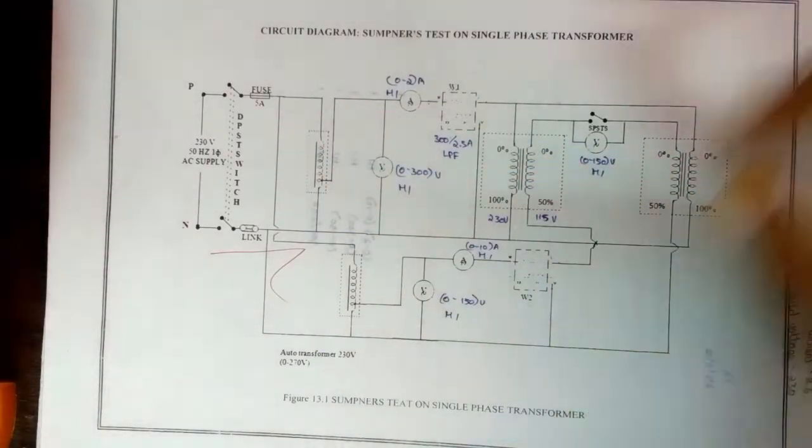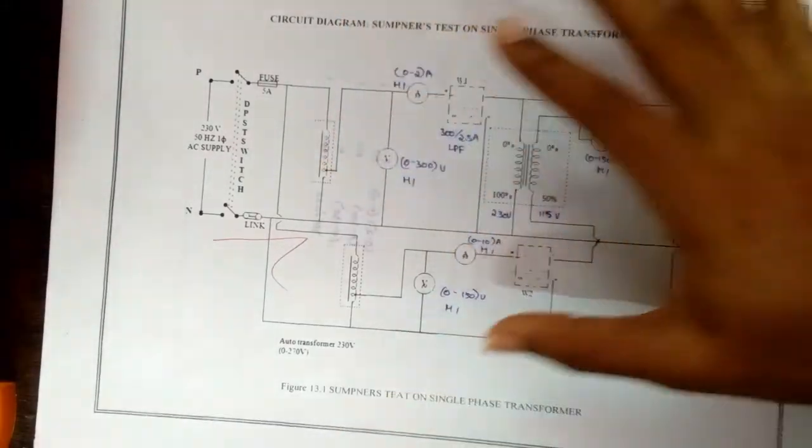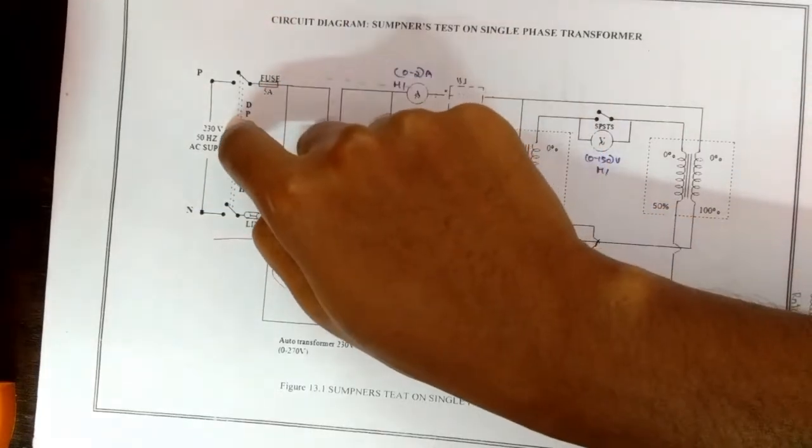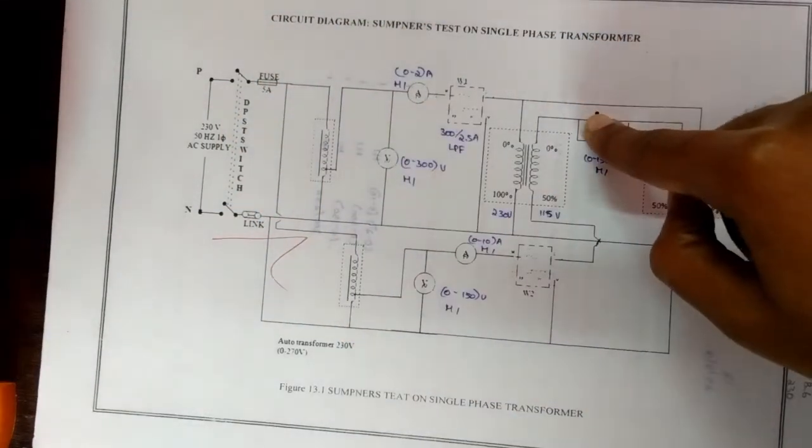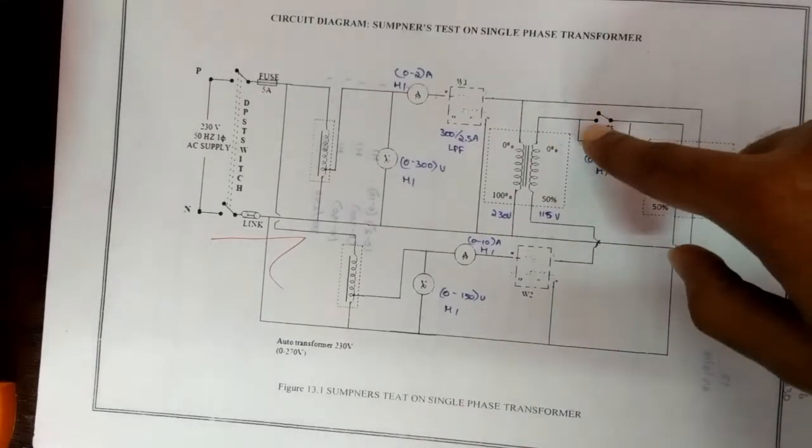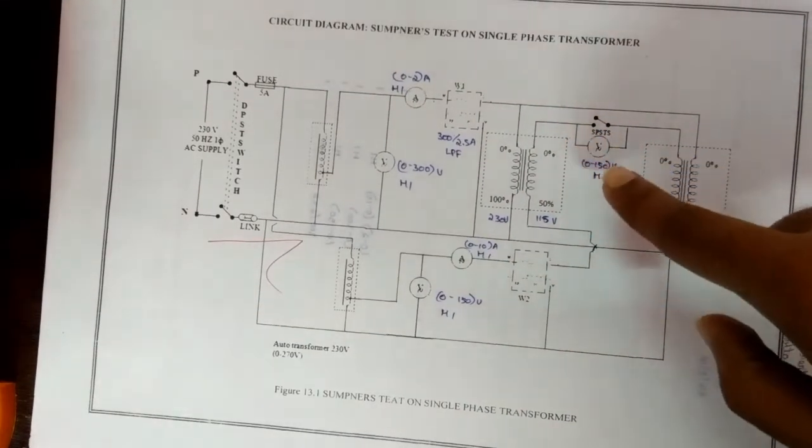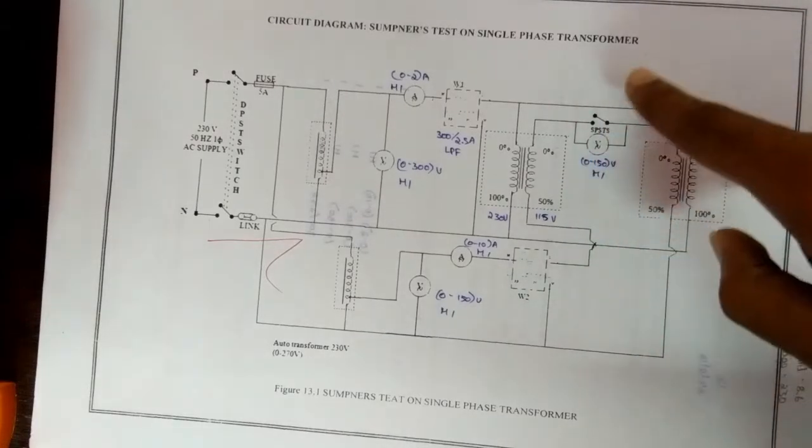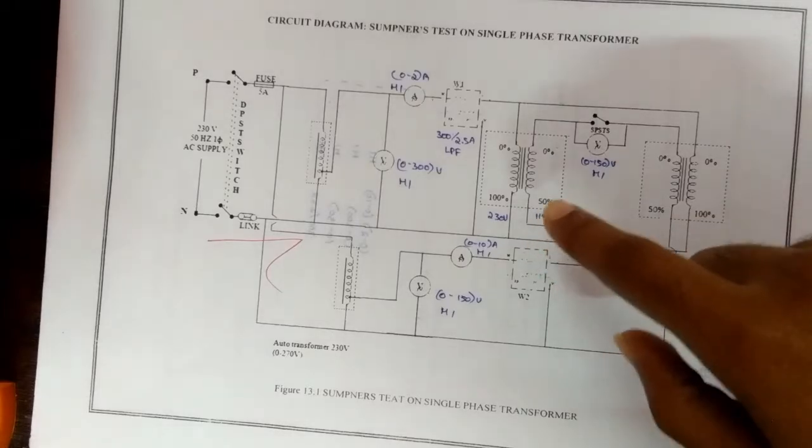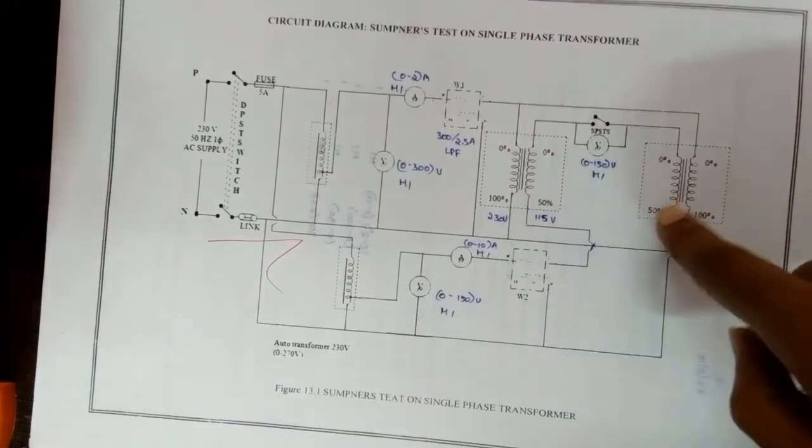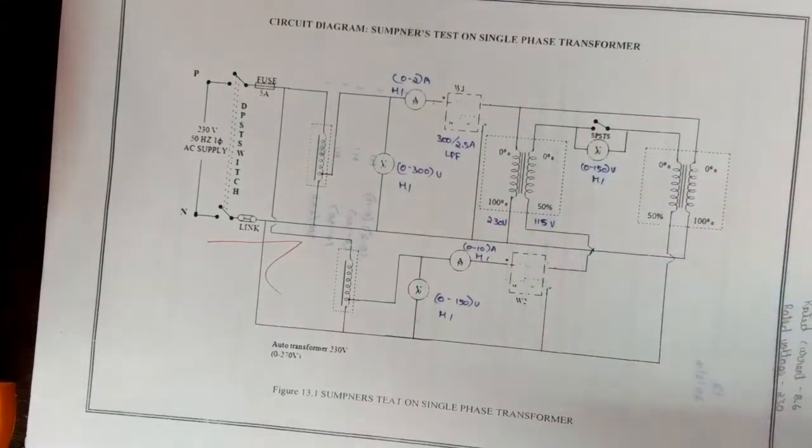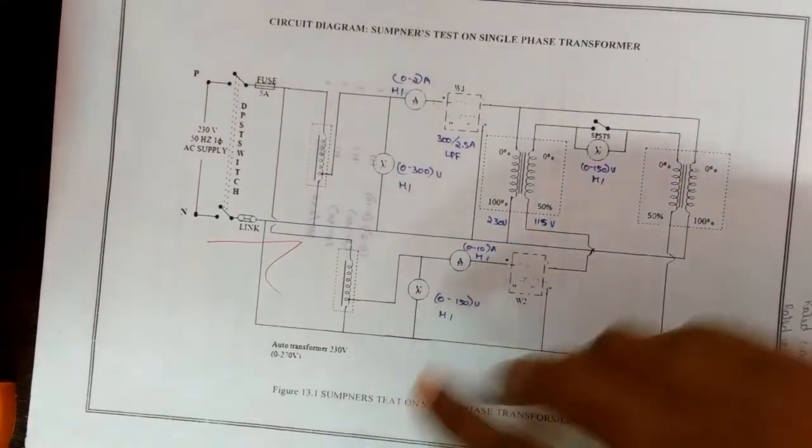For procedure, the connections are made as per the circuit diagram. The DPST switch is closed and SPST switch is kept open. If the voltmeter across the SPST switch reads zero, SPST switch is closed. Otherwise, the polarity of the transformer secondary is changed and the SPST switch is closed.